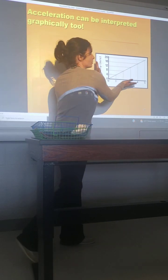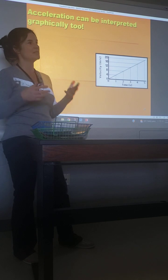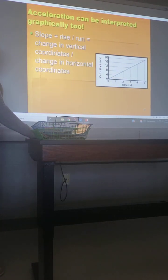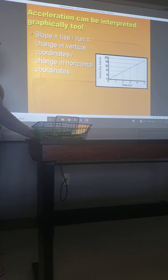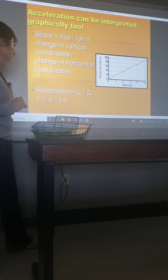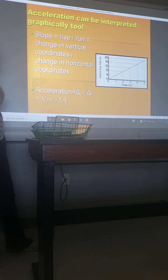Basically, whatever your labels are, whatever equation that matches, that's what the slope of the line is going to be showing you. We know that slope is rise over run, or our change in vertical coordinates over our change in horizontal. Since acceleration is velocity divided by time, the slope of this line is going to be acceleration.